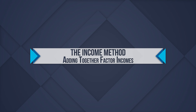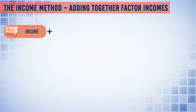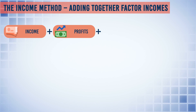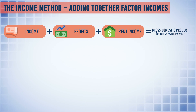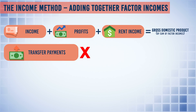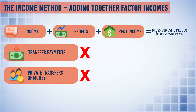The second method is the income method. GDP is the sum of the incomes earned through the production of goods and services. This includes income from people in jobs and in self-employment, profits of private sector businesses, and rent income from the ownership of land. Only those incomes that come from the production of goods and services are included. It excludes transfer payments — i.e. the state pension, income support for families on low incomes, the jobseeker's allowance for the unemployed, and any other welfare assistance such as housing benefit and incapacity benefits. Private transfers of money between individuals are also excluded.